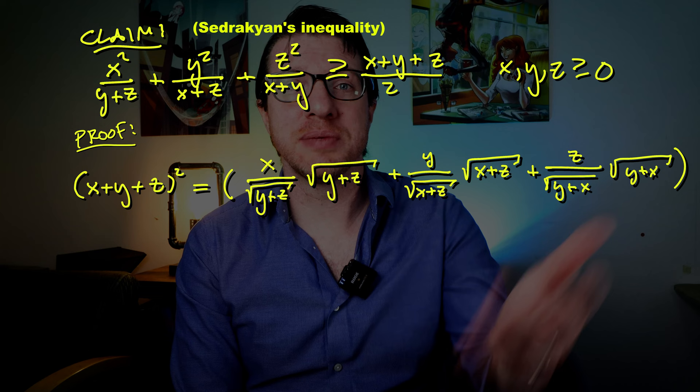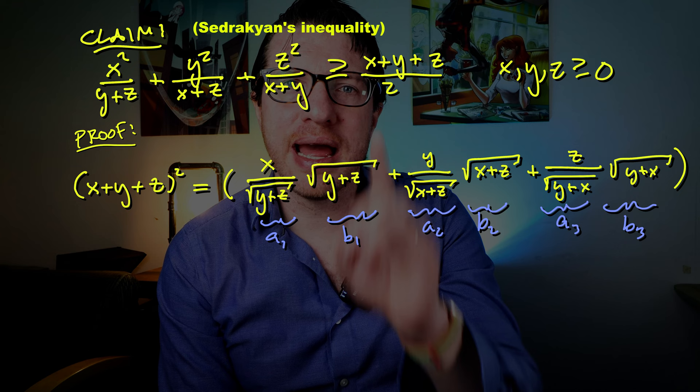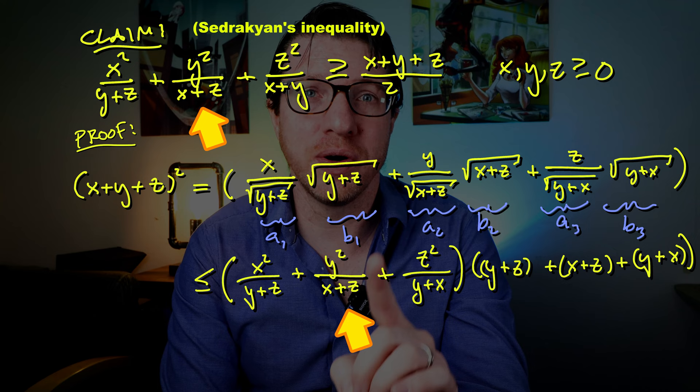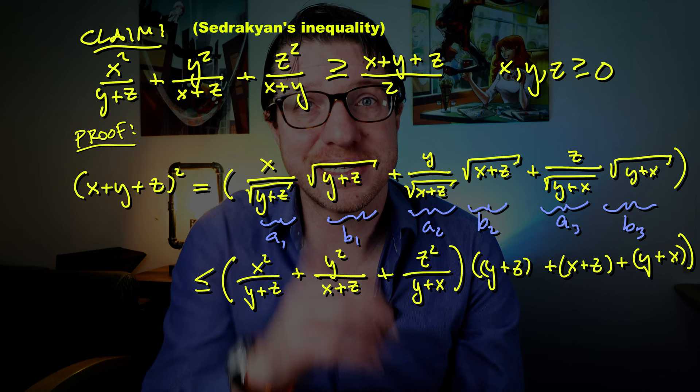Then we select our a_1 to be x divided by the square root of y+z and b_1 to be the square root of y+z, so multiplying and dividing it. Now we apply the Cauchy-Schwarz inequality and we get the term on the left of the inequality, but we also have this other term y+z+z+x+x+y. That second term is just x+y+z twice. So we can divide it over and we're done. That's a cool little inequality that follows immediately from the Cauchy-Schwarz inequality.